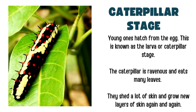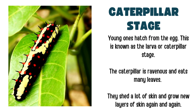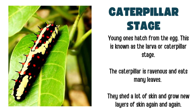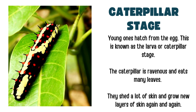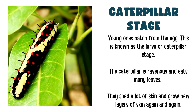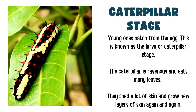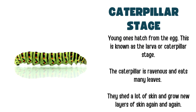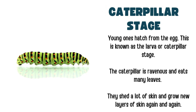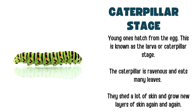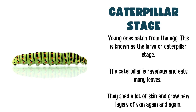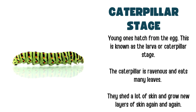From the egg emerges a beautiful caterpillar. This stage is also known as the larva or the caterpillar stage. At this stage, the caterpillar is very hungry and eats as much as it can. In the process, it sheds a lot of skin and grows new layers of skin.